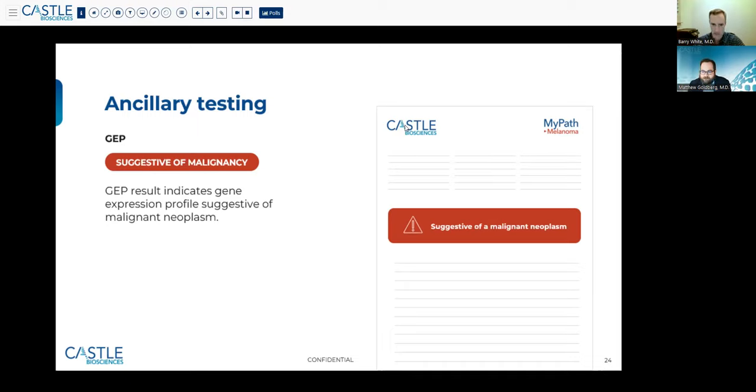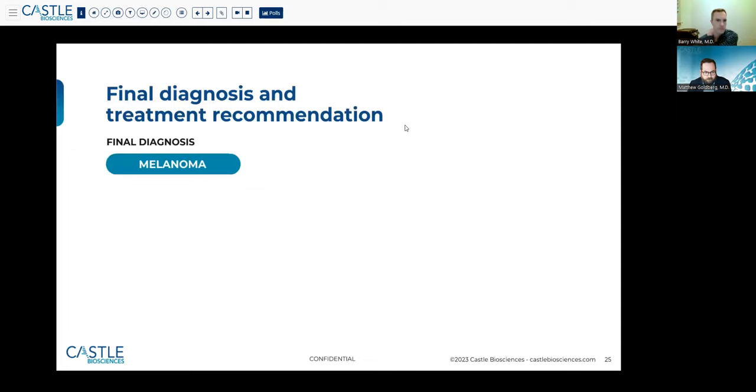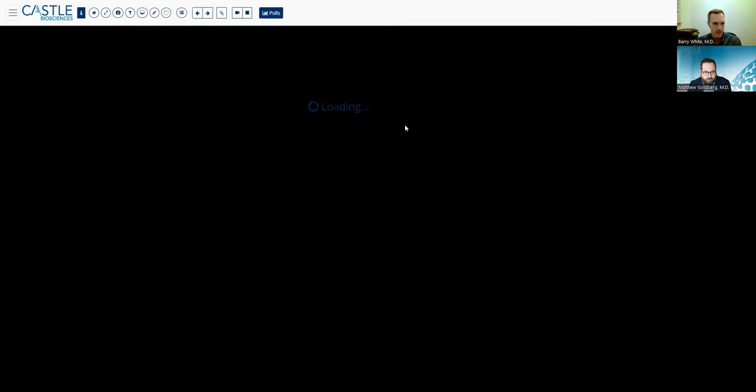Every once in a while, we know how dysplastic nevi are and how we rarely agree with each other and sometimes not even with ourselves from day to day. So you look at something a week later and you may have a different thought about it. But really just taking all that in together and none of this should be done in isolation. The GEP test is a great test in my opinion. I think we have a lot of evidence for it, but it's just like me, it's not perfect. So I think that these are all tools that have to be used in conjunction.